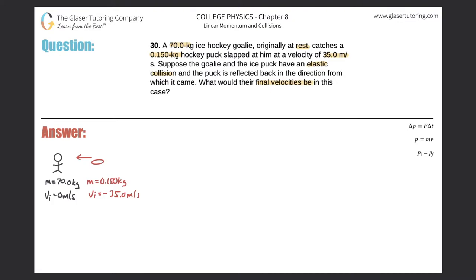So first thing is we're dealing with an elastic collision and they're telling us velocities and masses. What I'm thinking about is using conservation of momentum — the momentum initially will equal the momentum finally. So now let's expand on both. The initial momentum in the problem will consist of both objects — both the goalie and the puck.